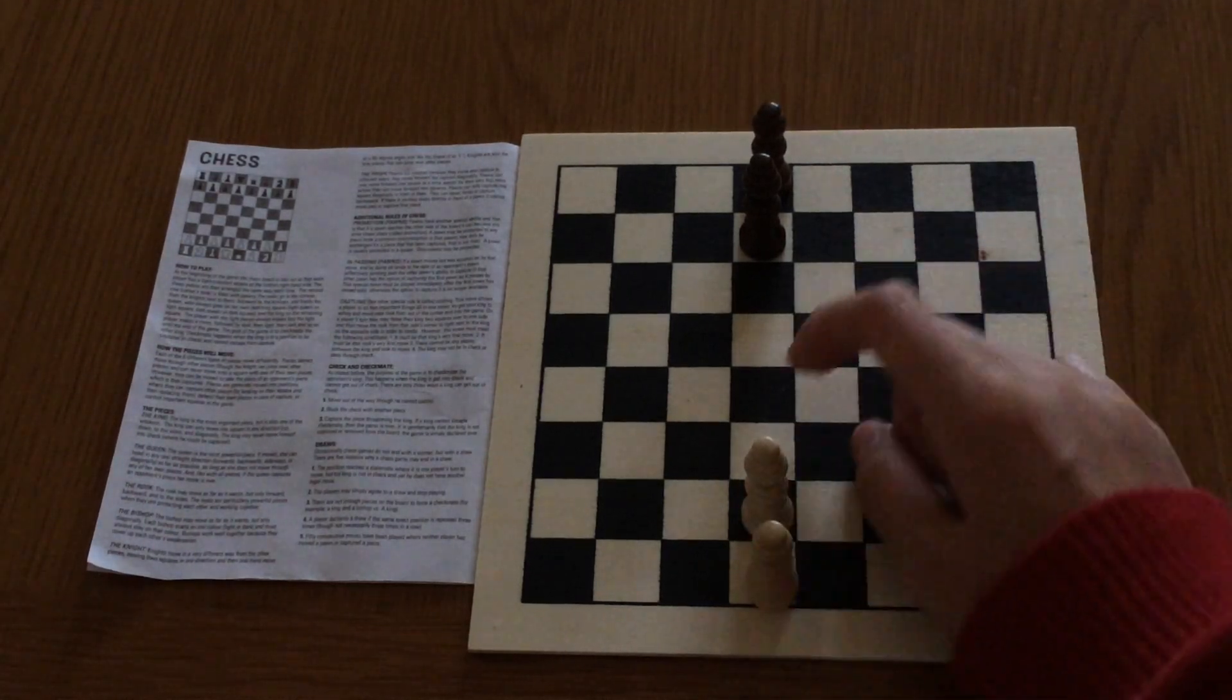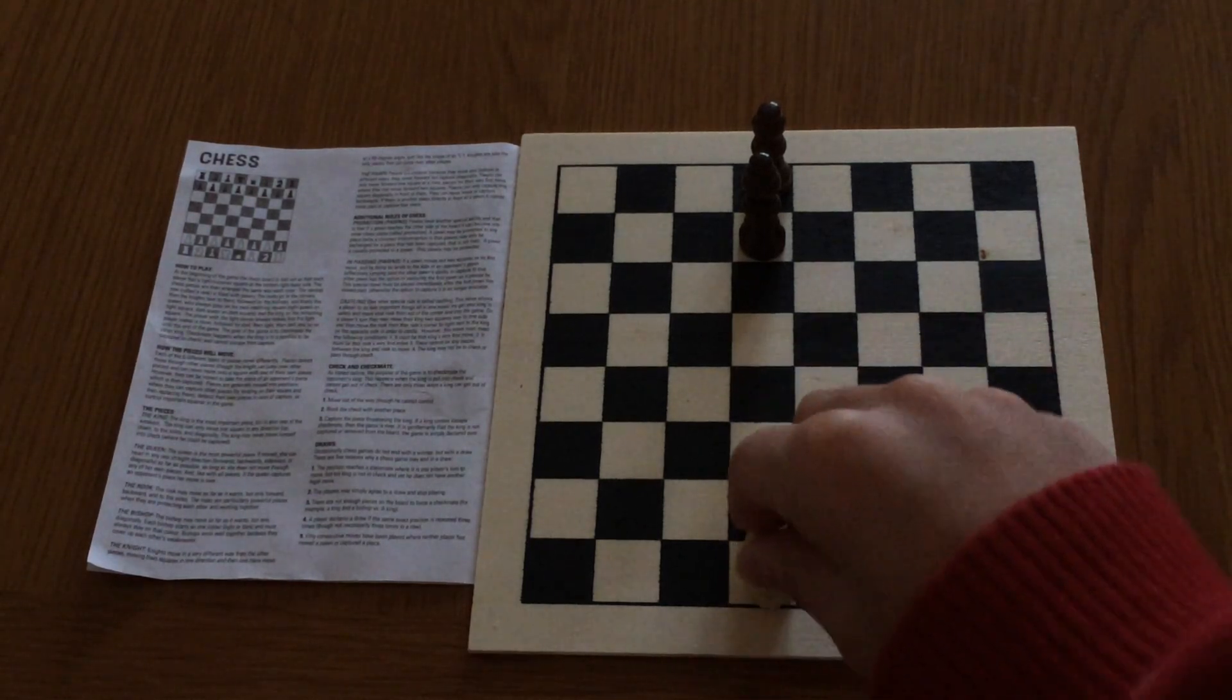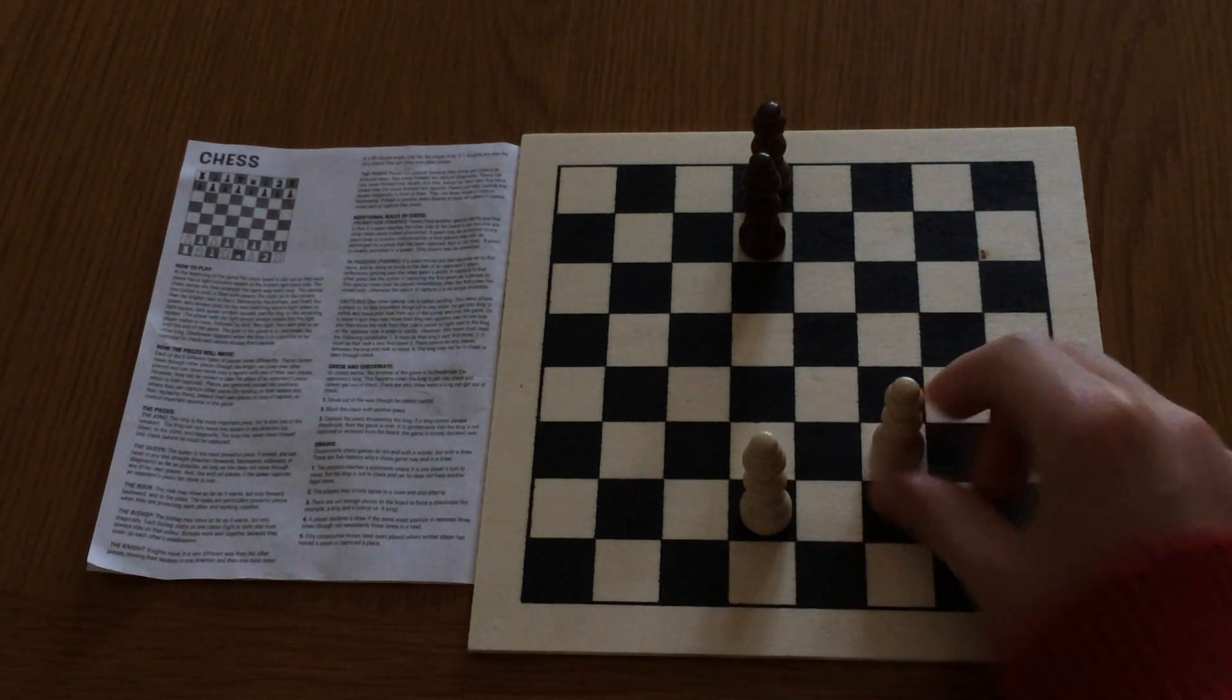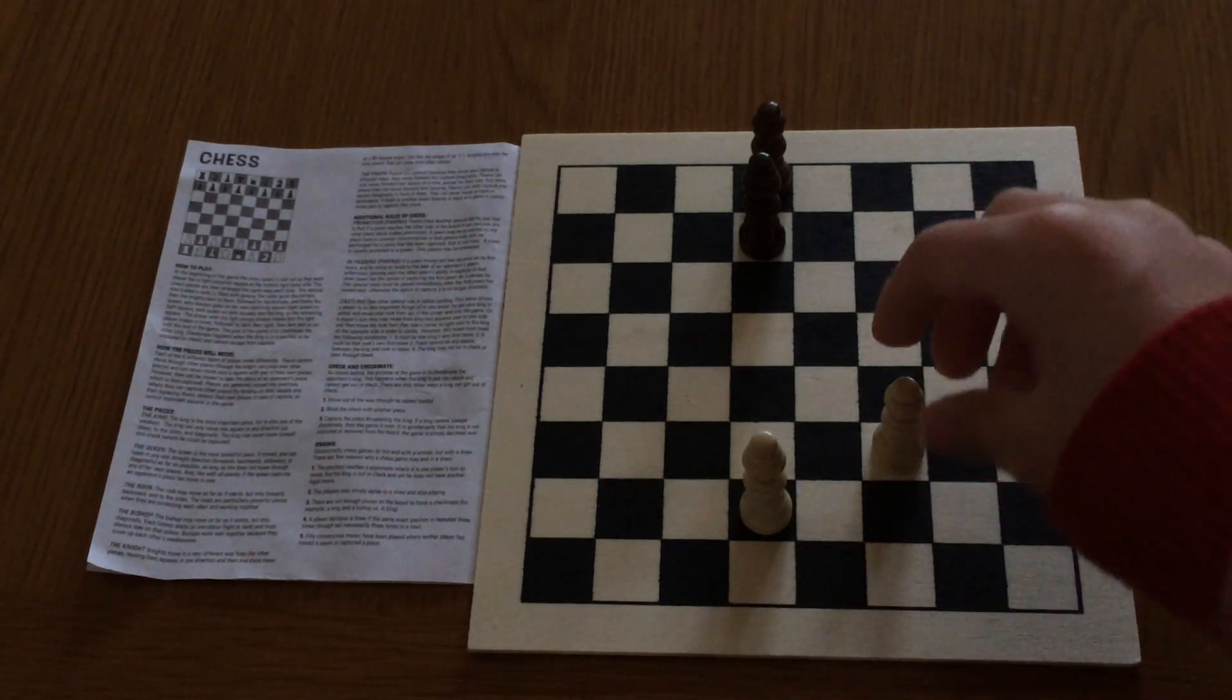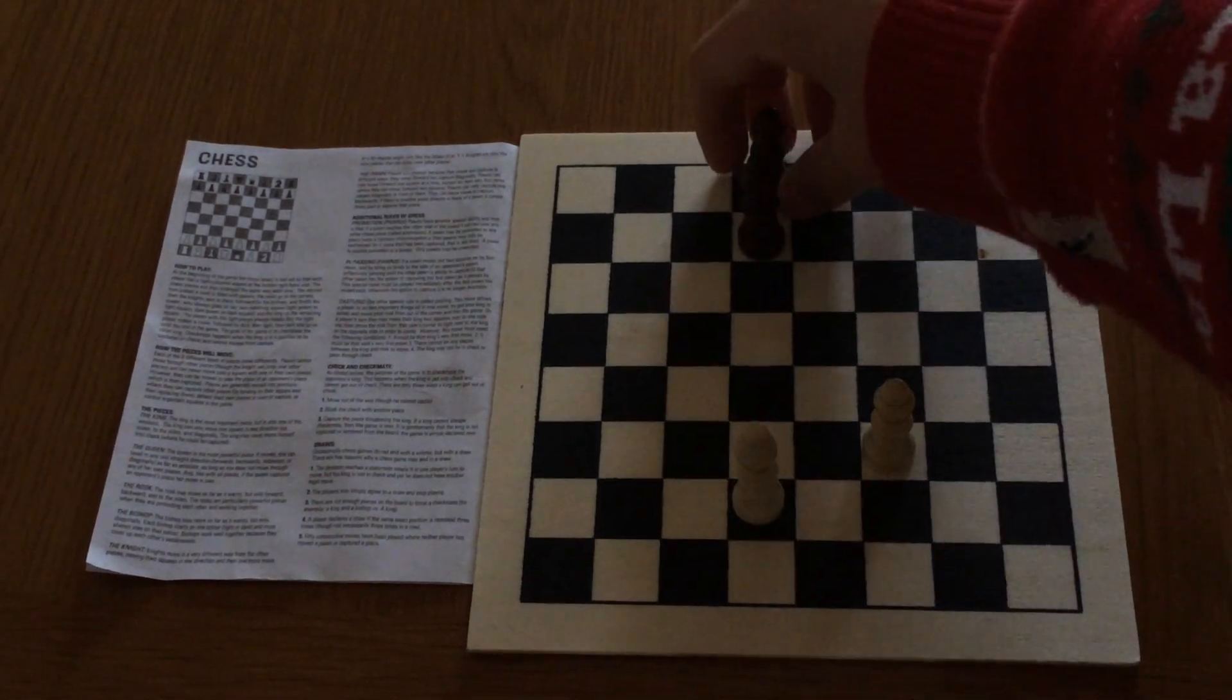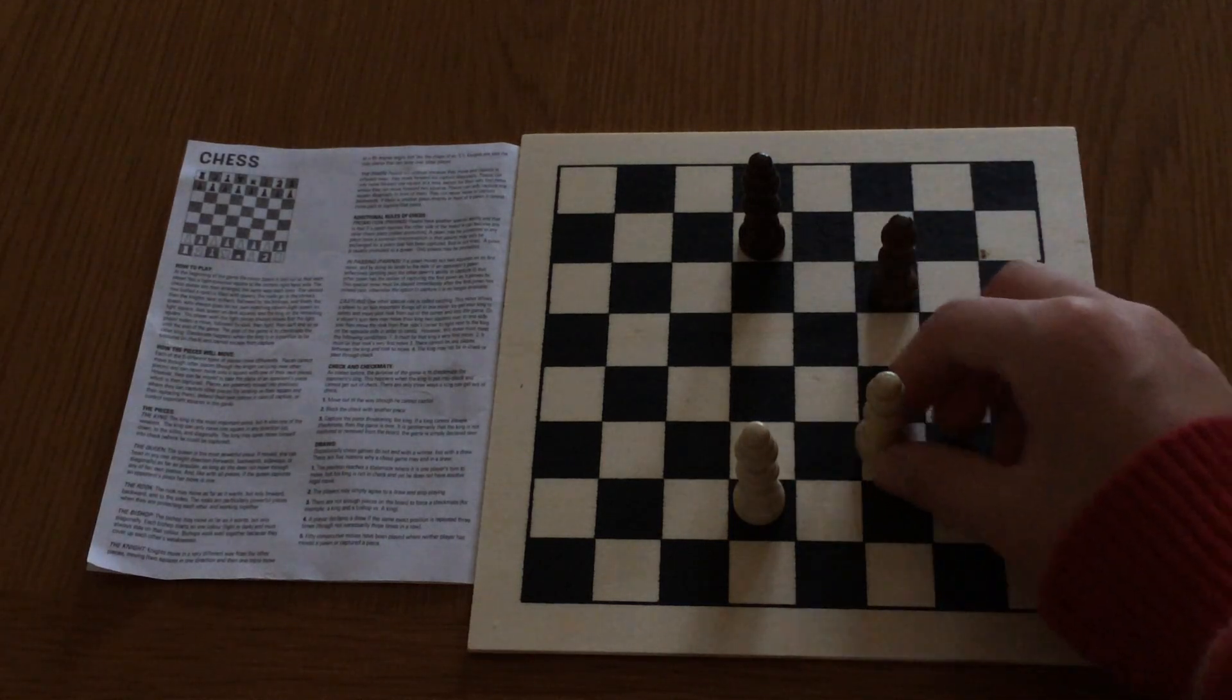If the Queen wants to go on this square, it has to make some other moves, like this, like this, and then this, this, this, and then this.